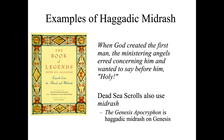Here's another example: 'When God created the first man, the ministering angels erred concerning him and wanted to say before him, Holy' — in other words, the angels wanted to worship man because man is made in the image of God and therefore is a really great creature. This kind of interpretation, we call Midrashic interpretation. It's also found in the Dead Sea Scrolls — at least in some documents there, like the Genesis Apocryphon, which is basically Haggadic Midrash on the book of Genesis.